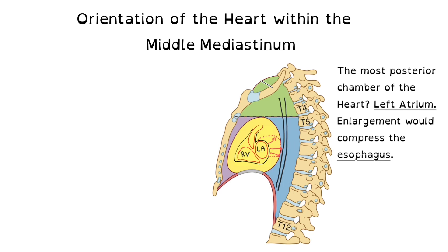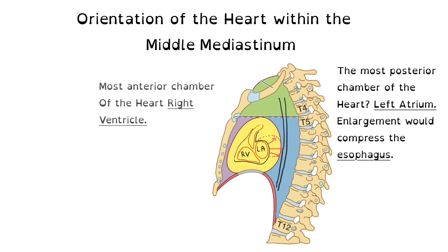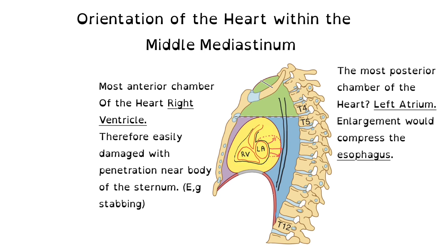The most anterior aspect of the heart is the right ventricle. Therefore, if someone has penetration with a sharp object near the body of the sternum — for example, being stabbed by a knife — the right ventricle is the one most likely to be damaged.